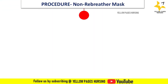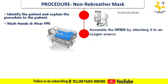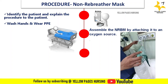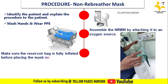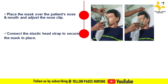The procedure to apply a non-rebreather mask: first, identify the patient and explain the procedure to them. Next, wash hands thoroughly. Then assemble the non-rebreather mask by attaching it to an oxygen source such as a cylinder or wall outlet. Make sure the reservoir bag is fully inflated before placing the mask on the patient's face. Place the mask over the patient's nose and mouth and adjust the nose clip to ensure correct fit.